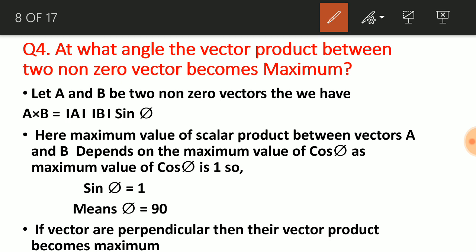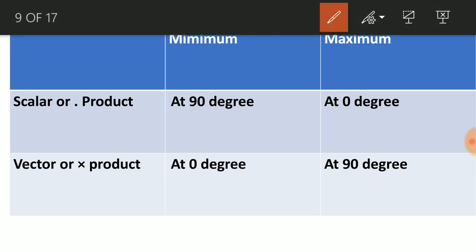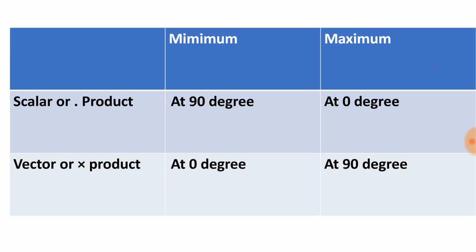At what angle does the vector product between two non-zero vectors become maximum? If A×B = AB sinφ, and A and B are fixed numbers, then sinφ must be maximum. The maximum value of sinφ is 1, giving θ = 90°. So if the angle between two vectors is 90°, the vector product becomes maximum. Comparing: scalar product is minimum at 90° and maximum at 0°; for vector product it is the reverse.